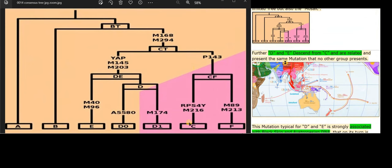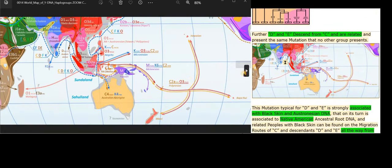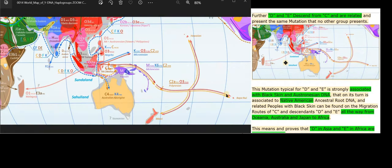Further, D and E descend from C and are related and present the same mutation that no other group presents. This mutation typical for D and E is strongly associated with black skin and Austronesian DNA, that on its turn is associated to Native American ancestral root DNA.